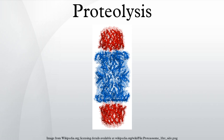Proteolysis can therefore be a method of regulating biological processes by turning inactive proteins into active ones. A good example is the blood clotting cascade whereby an initial event triggers a cascade of sequential proteolytic activation of many specific proteases, resulting in blood coagulation. The complement system of the immune response also involves a complex sequential proteolytic activation and interaction that results in an attack on invading pathogens.